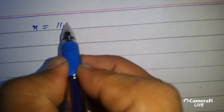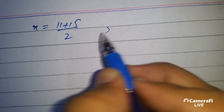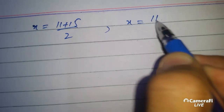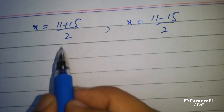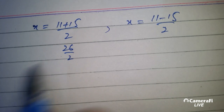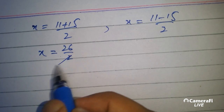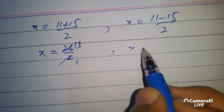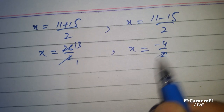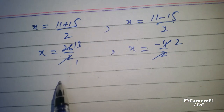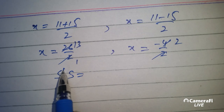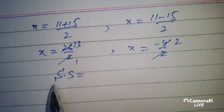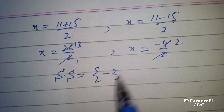It will be plus. X equals plus 11 by 2. X equals 11 minus 15 by 2 — which is 26 by 2, so it will be plus 13. Here it will be minus 4 by 2, which is minus 2. So the solution set is {minus 2, 13}.